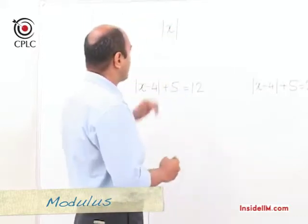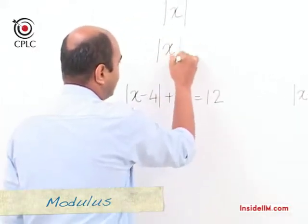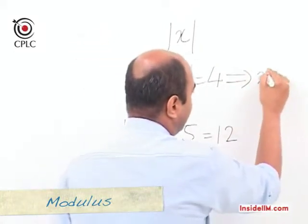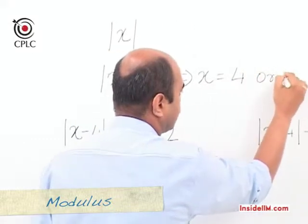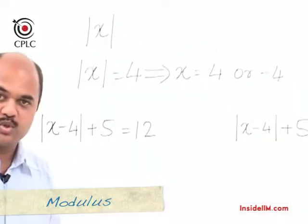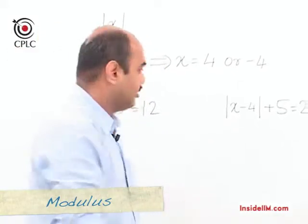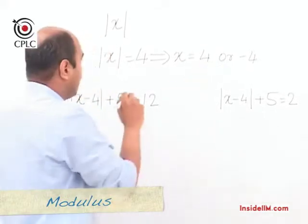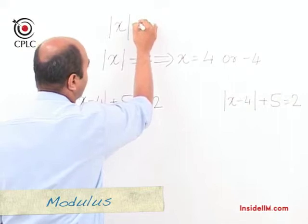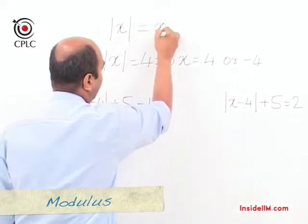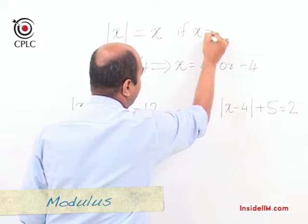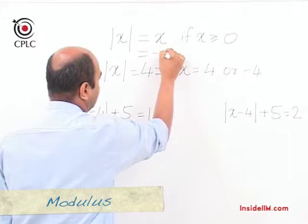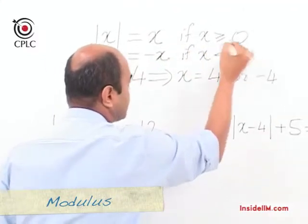How do we solve this further? Suppose we say mod x is equal to 4 — what does it mean? It means x is either equal to plus 4 or minus 4. So when we open up the modulus sign, we take both possibilities: positive and negative. However, mod x equals x only when x is greater than or equal to zero, and mod x equals minus x when x is less than zero.